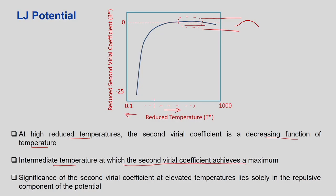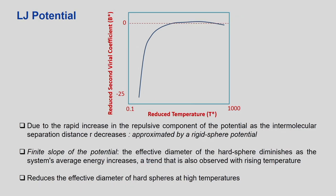At higher temperature, the significance of the second virial coefficient lies solely in the repulsive component of the potential. Due to the rapid increase in the repulsive component as the intermolecular distance decreases, it can be approximated by a rigid sphere potential.